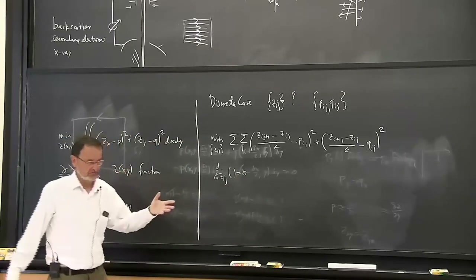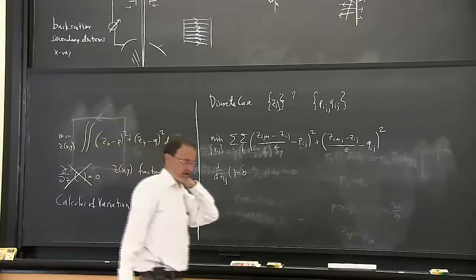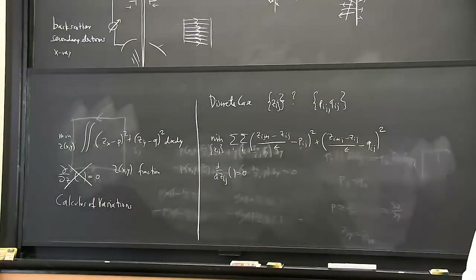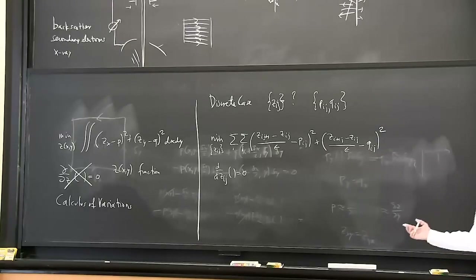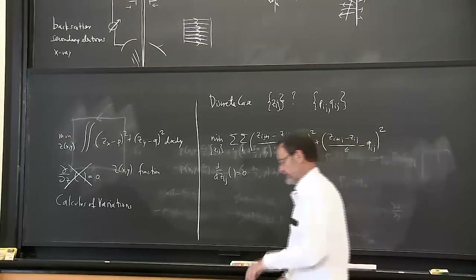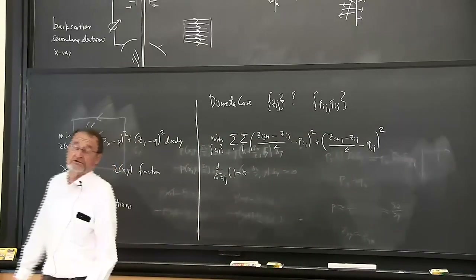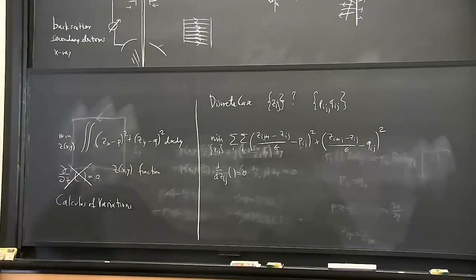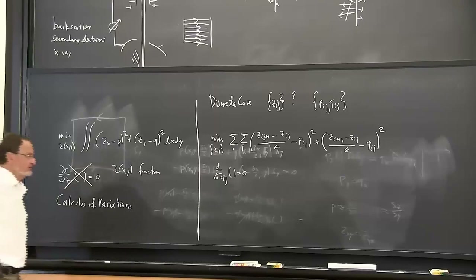If the image has a million pixels, there will be a million equations. Fortunately, because we picked least squares, the equations are all going to be linear. As much as there are disadvantages to using least squares - such as not being robust against outliers - we can solve these equations because they're just linear equations.